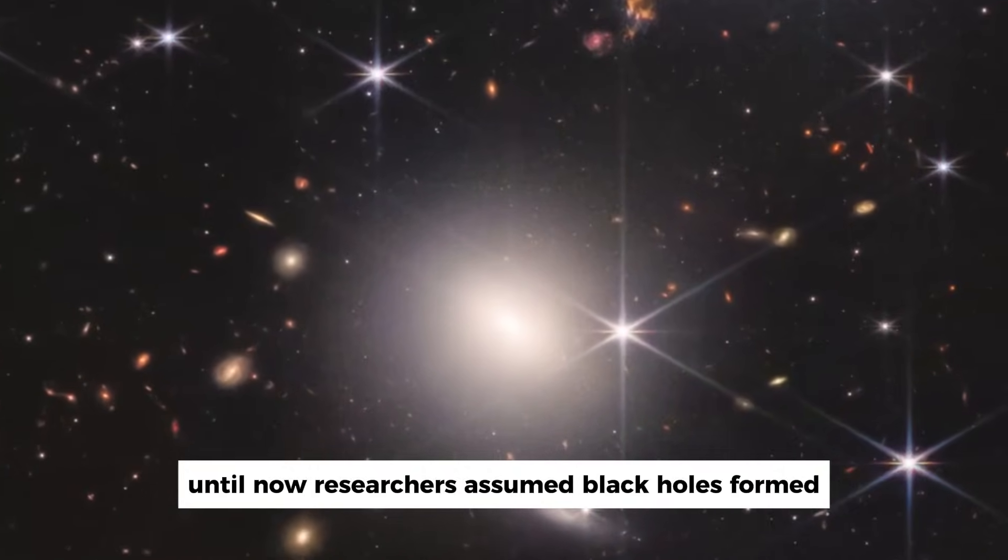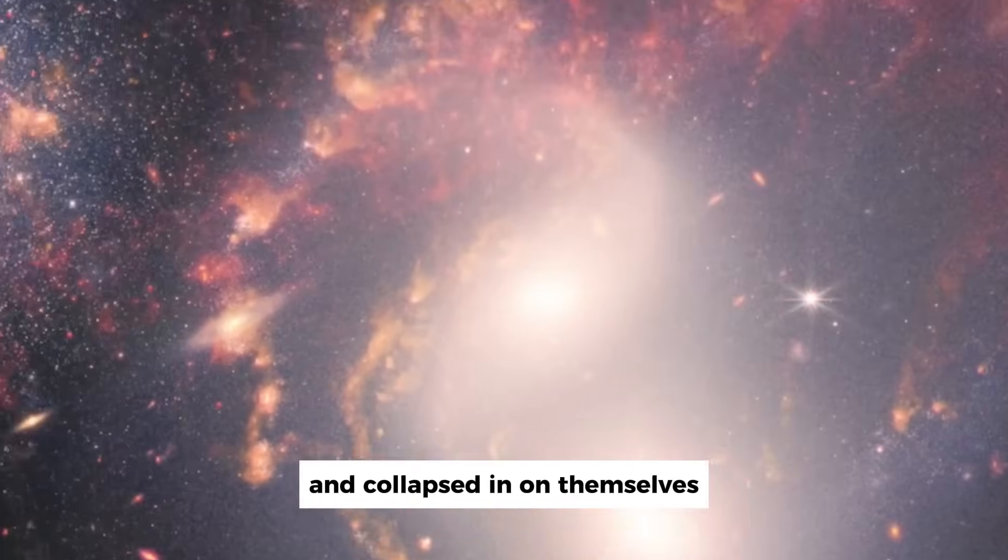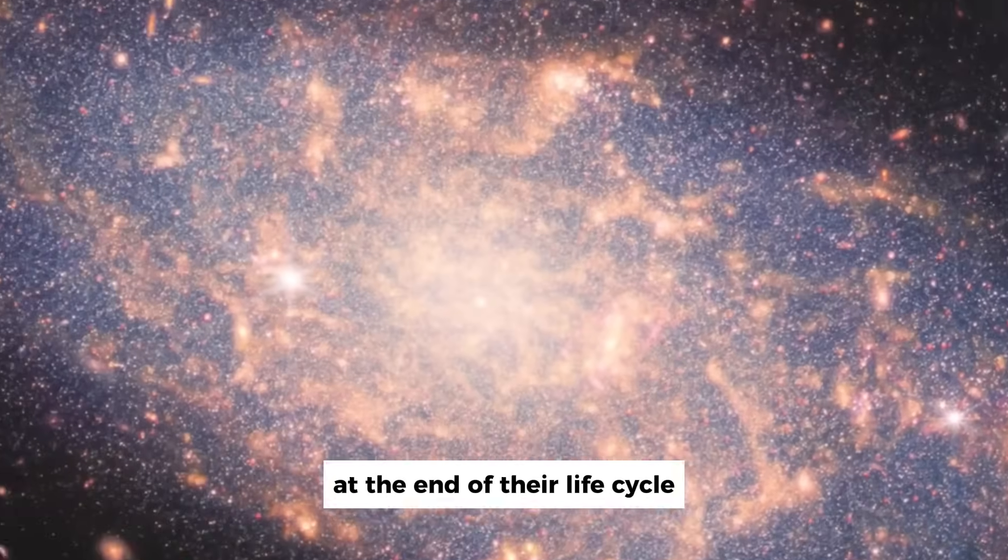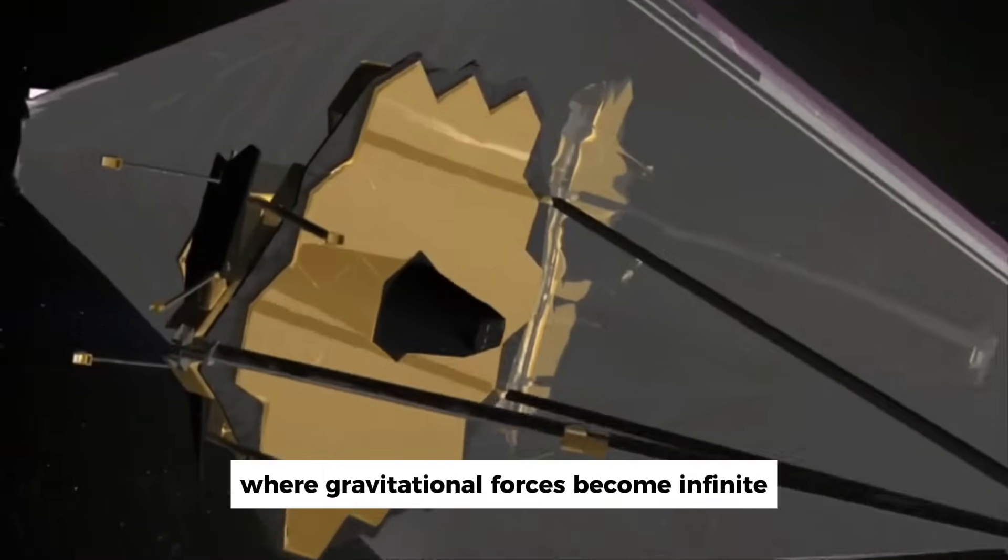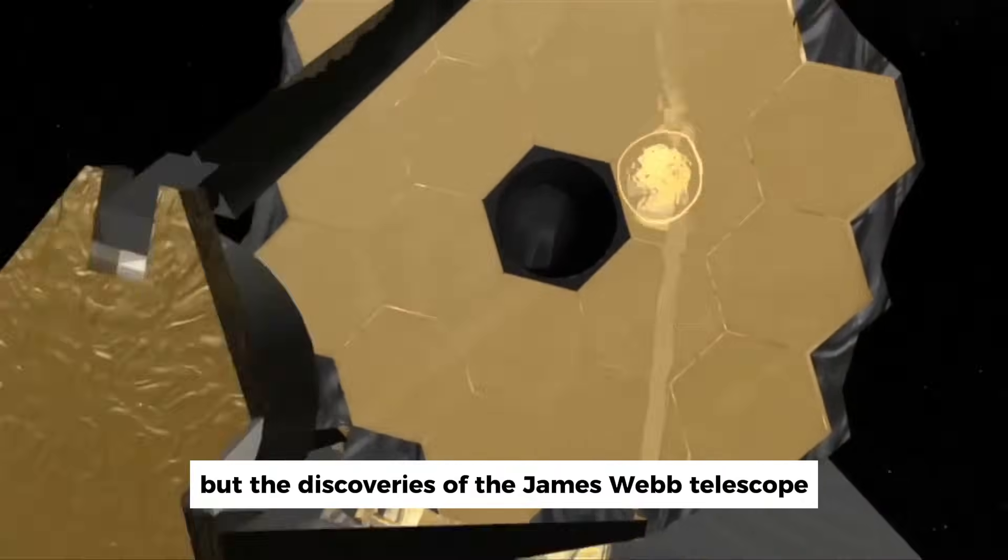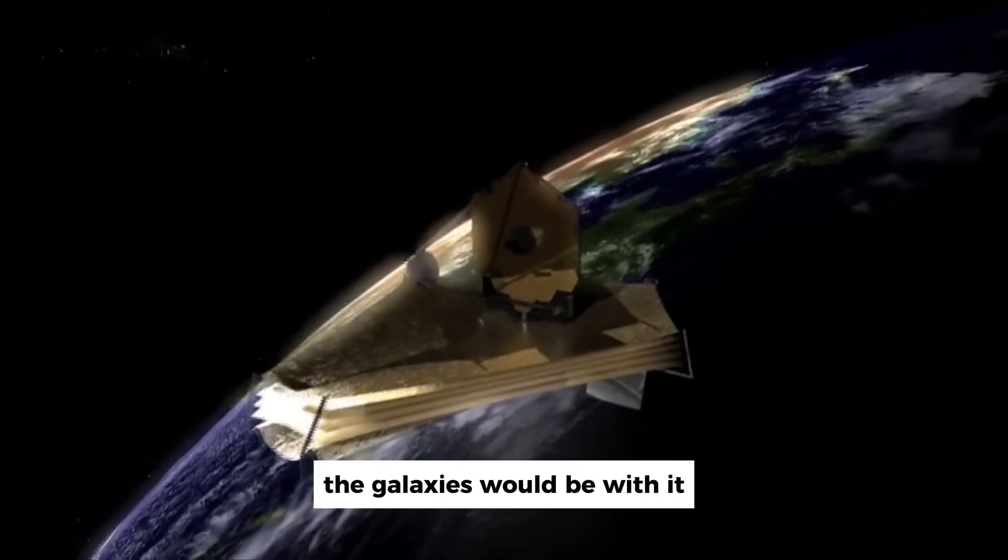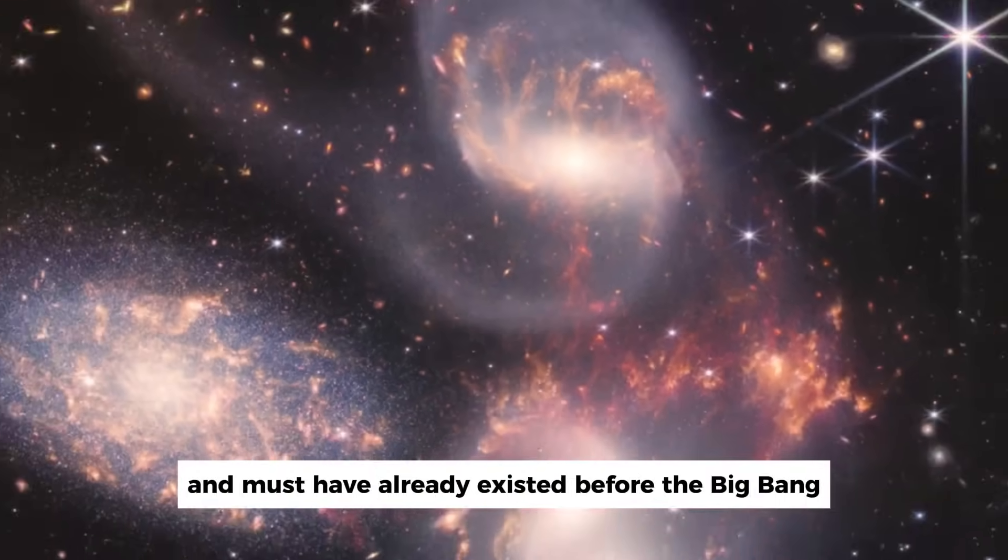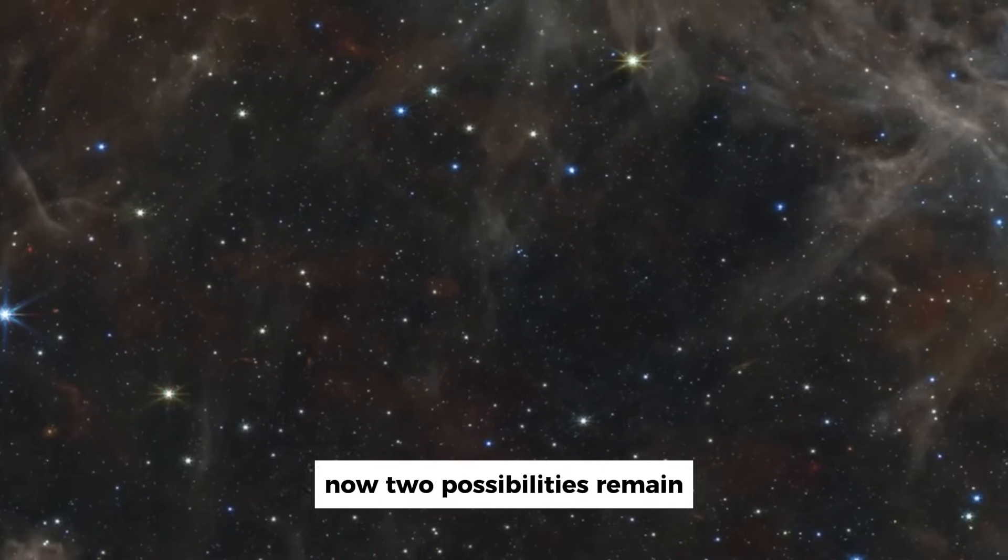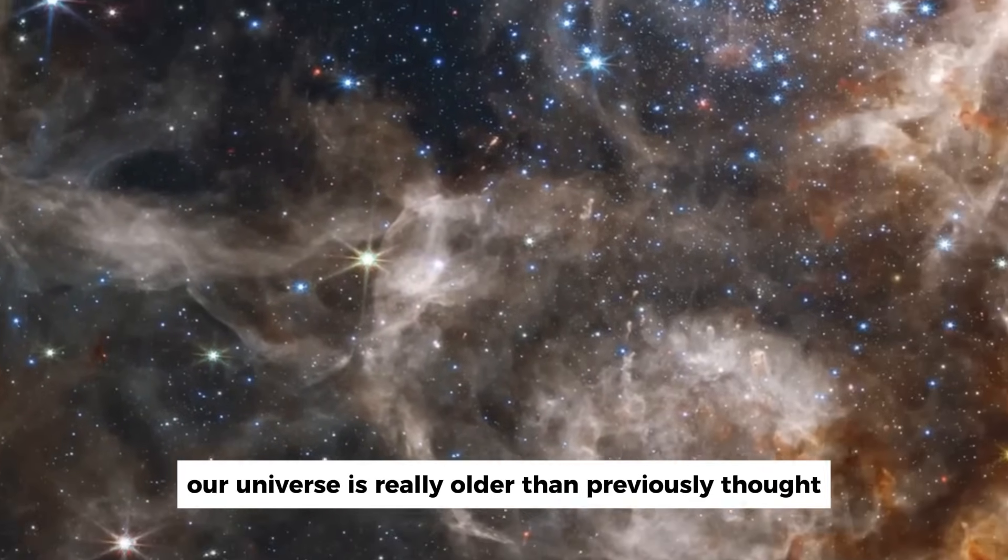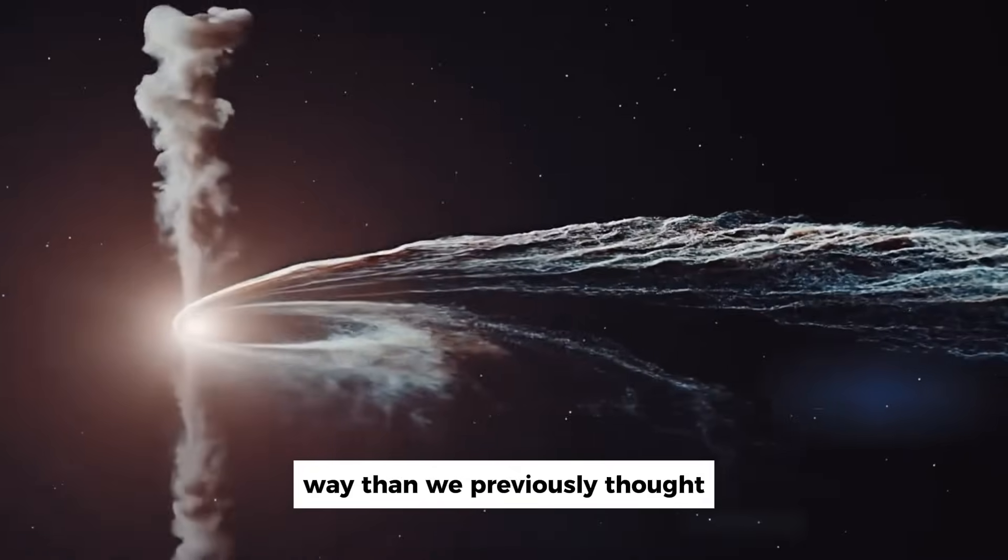Until now, researchers assumed black holes formed when massive stars collapsed and collapsed in on themselves at the end of their life cycle. The result is a point in space where gravitational forces become infinite. But the discoveries of the James Webb Telescope don't quite fit the picture here. The galaxies would be, with it, still far older and must have already existed before the Big Bang. Now two possibilities remain. Our universe is really older than previously thought, or black holes are formed in a completely different way than we previously thought.